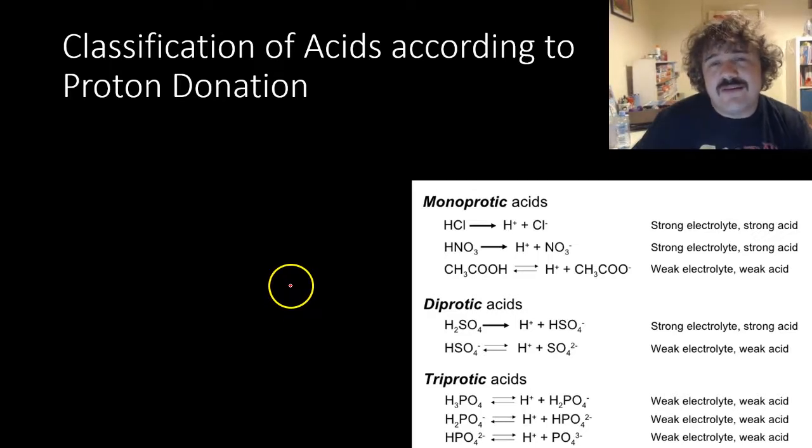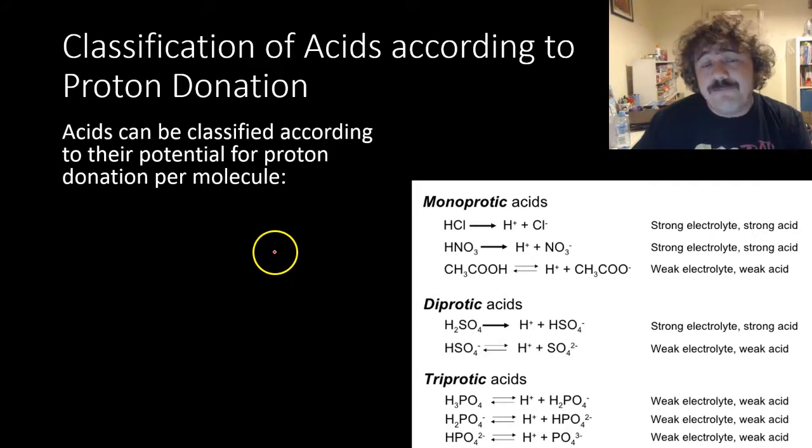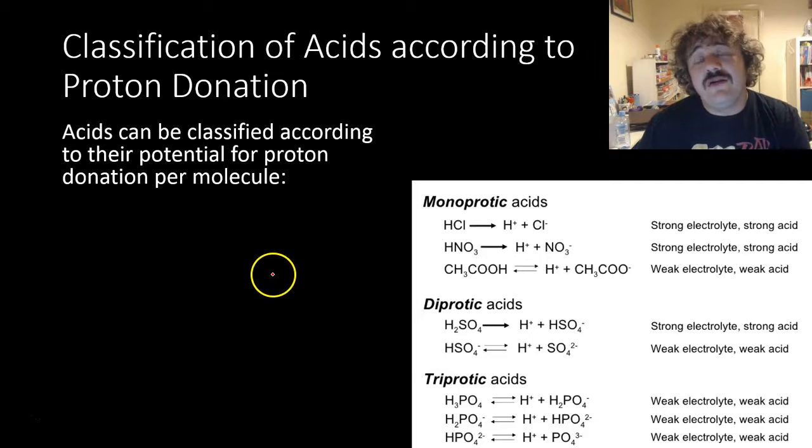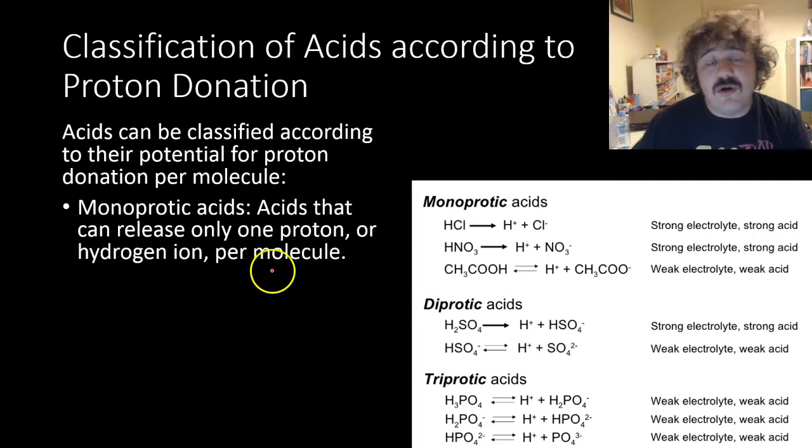Let's have a quick classification. We can classify acids based on their strength and how many hydrogens they have to offer. A monoprotic acid donates one proton.